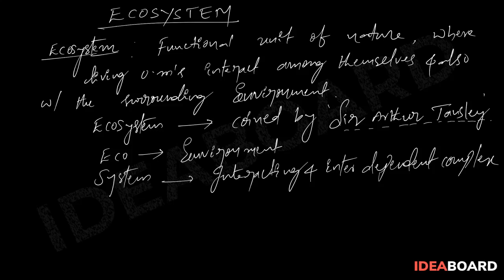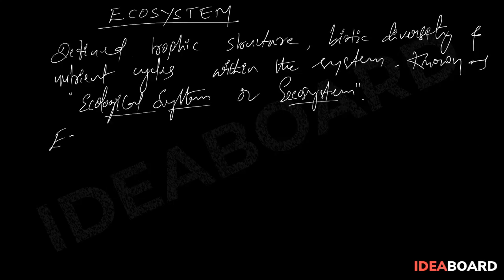Ecosystem types: ecosystems vary greatly in size. A small ecosystem is called micro ecosystem and a larger ecosystem is called mega ecosystem.